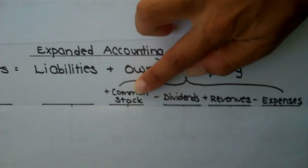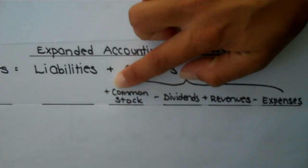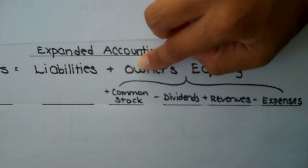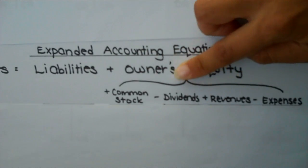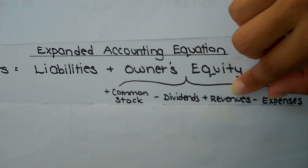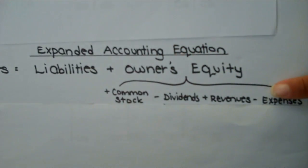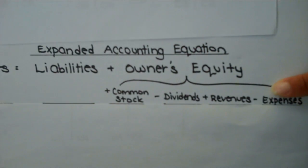Common stock increases owner's equity, dividends decreases owner's equity, revenues increases owner's equity, and expenses decrease owner's equity.